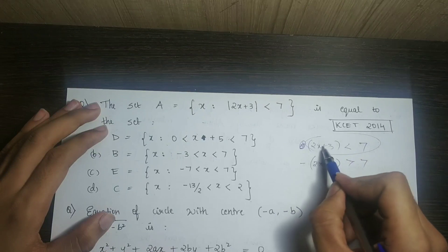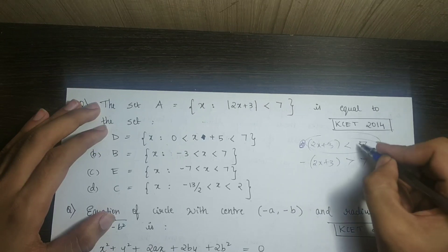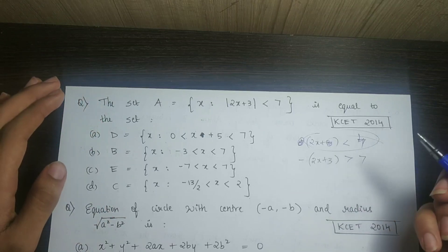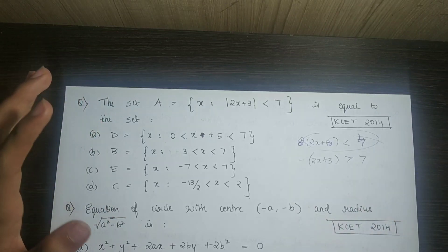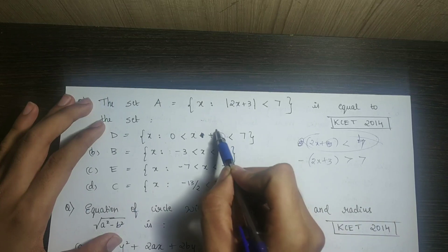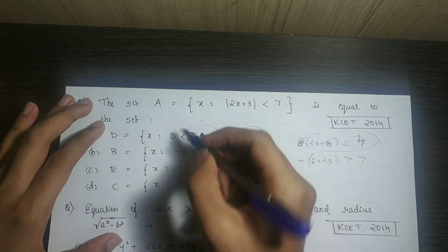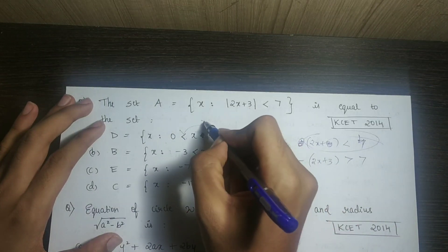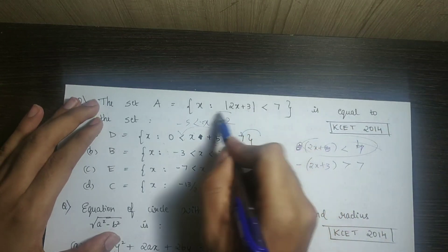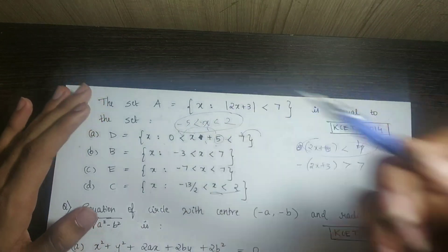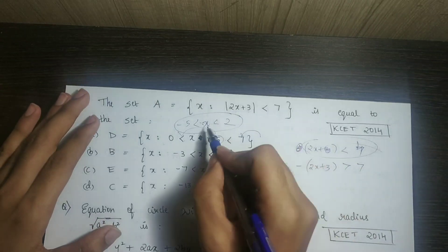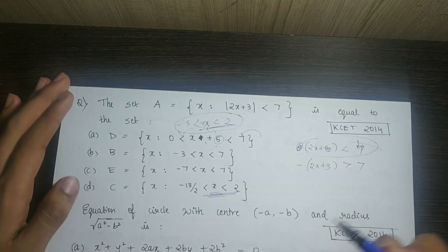Solving the positive case: 2x plus 3 less than 7, so 2x less than 4, giving x less than 2. That satisfies the condition and corresponds to option D.